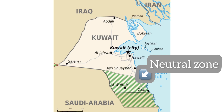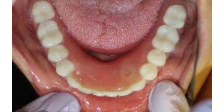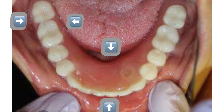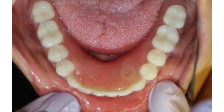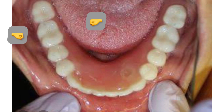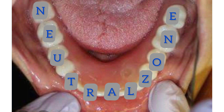We have a neutral zone like this in our very own oral cavity, where two powerful forces are constantly in action against each other from opposing directions. So if our dentures have to survive this constant attack, they definitely have to lie in a zone where the forces from inside — by the tongue — and from outside — by the lips and cheeks — are neutral. This exactly is the neutral zone concept popularized by Fish: for perfect harmony and zero conflict, the teeth and the polished surface of a denture should lie within this neutral zone.